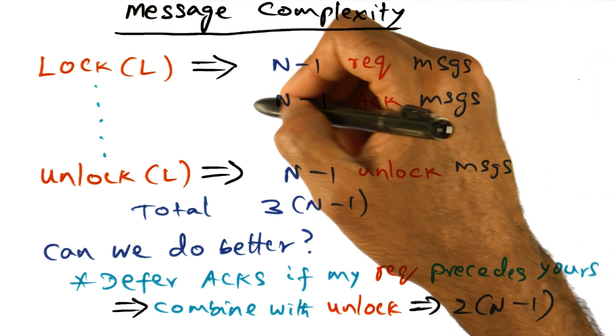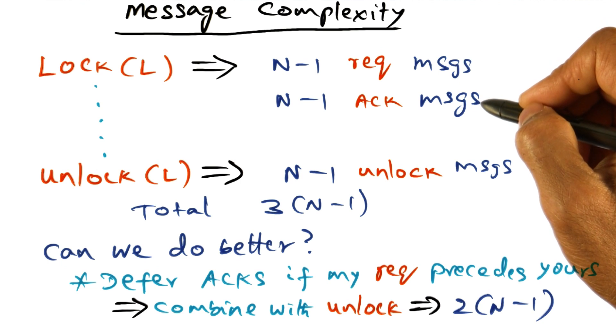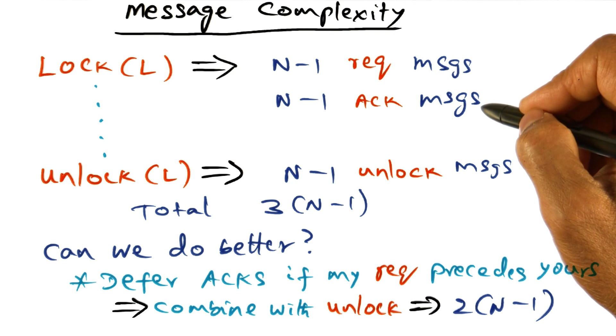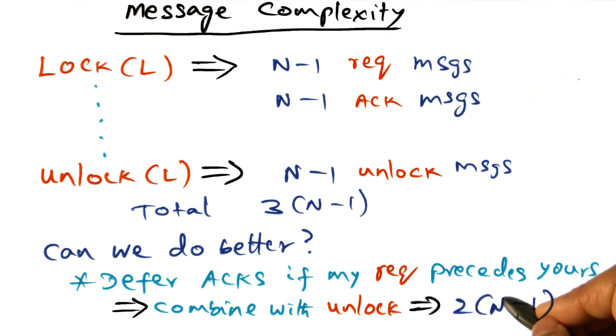So what we are doing is to get rid of the acknowledgment messages if, in fact, our own lock request is ahead of an incoming request that I see from a peer. That's how we can reduce the messaging complexity of this algorithm to be 2 times n minus 1.